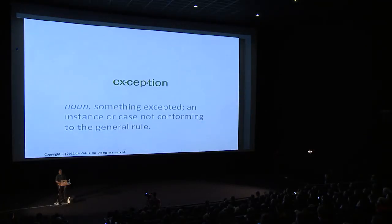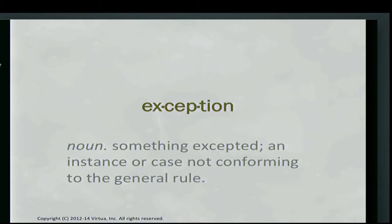So what exactly is an exception? An exception is something excepted — it's an instance or a case not conforming to the general rule. Basically, an exception is anything that's not normal. In any application you need to be able to deal with situations where things are not normal, because if you don't deal with them they end up showing up in different ways.